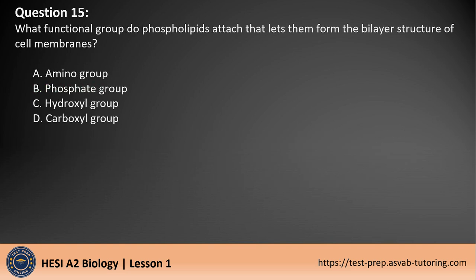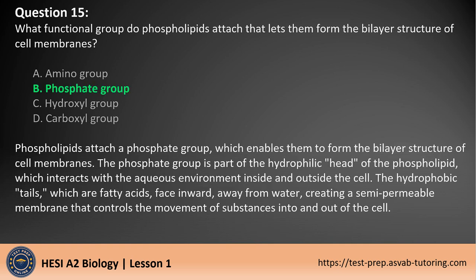Question 15. What functional group do phospholipids attach that lets them form the bilayer structure of cell membranes? The answer is B. Phospholipids attach a phosphate group, which enables them to form the bilayer structure of cell membranes. The phosphate group is part of the hydrophilic head of the phospholipid, which interacts with the aqueous environment inside and outside the cell. The hydrophobic tails, which are fatty acids, face inward away from water, creating a semi-permeable membrane that controls the movement of substances into and out of the cell.